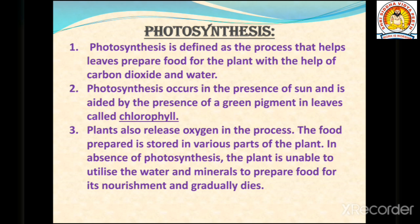Leaves prepare food using carbon dioxide and water. Photosynthesis occurs in the presence of sunlight and is aided by the green pigment in leaves called chlorophyll. The green color of the leaf comes from chlorophyll, which is very necessary for the photosynthesis process to be carried out.